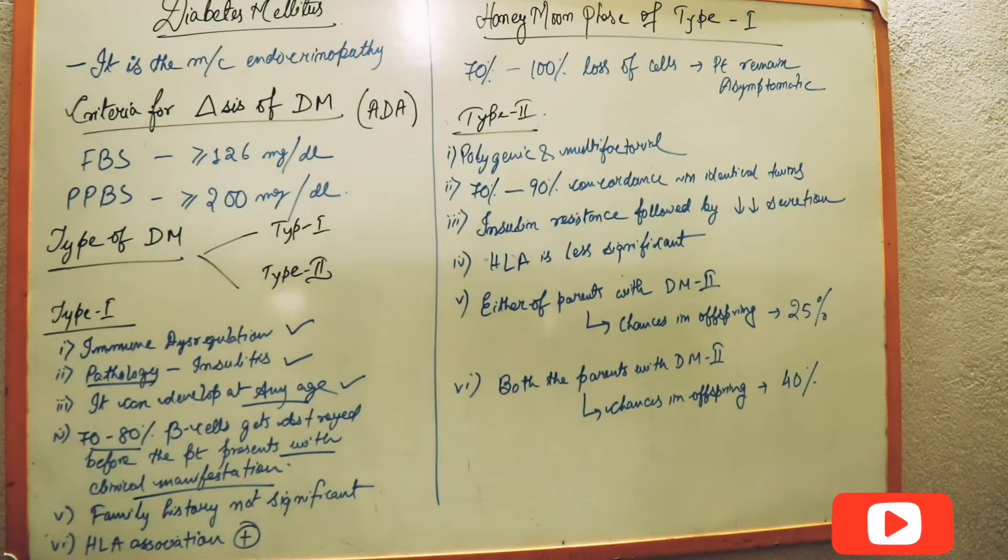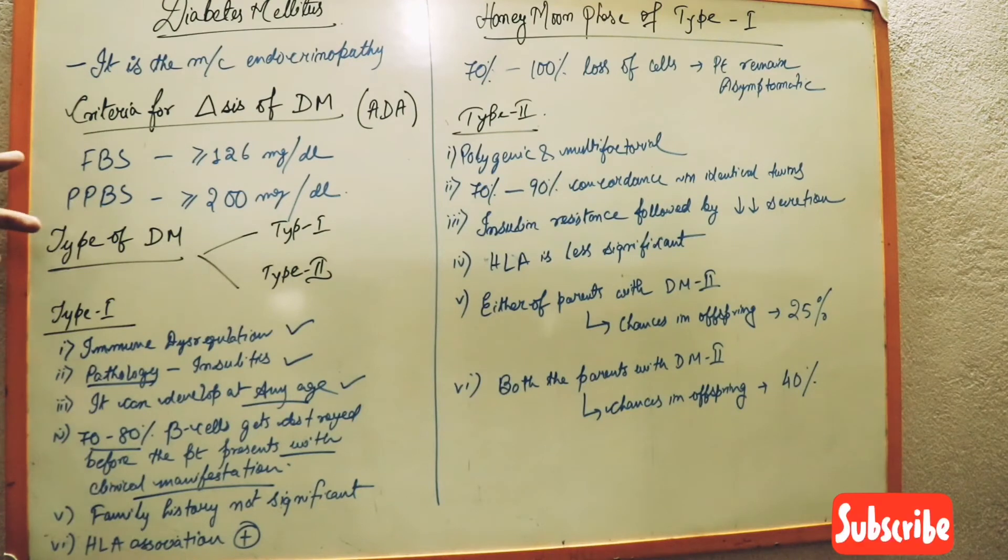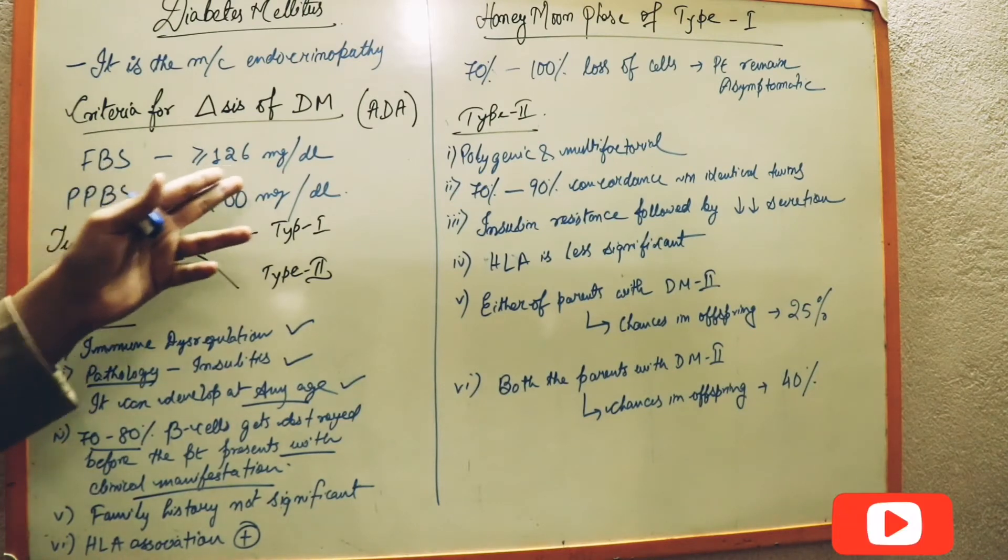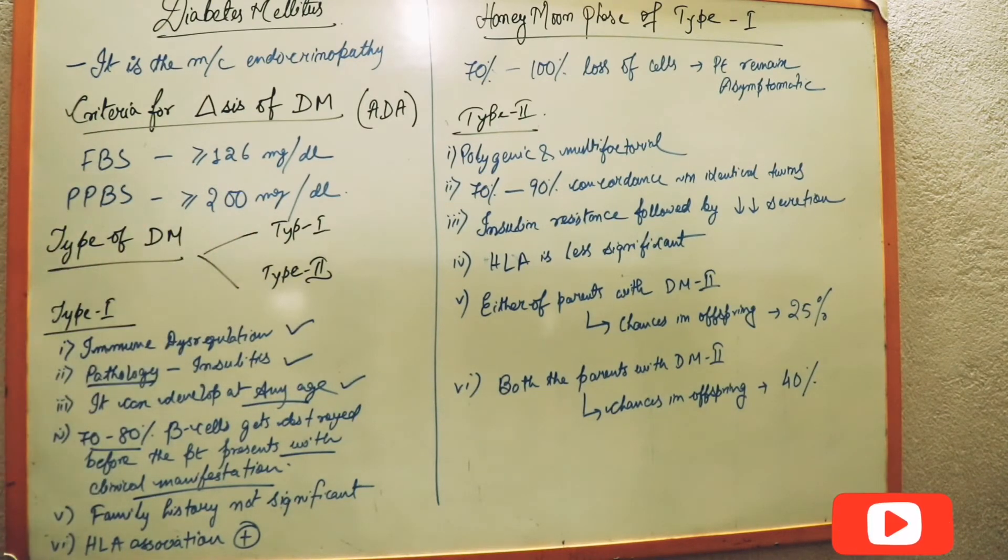What are the clinical manifestations? If we test for diabetes mellitus or glucose level, the glucose level will be absolutely high: greater than 126 for fasting and greater than 200 for postprandial blood sugar. Family history is not significant. The most important thing is that HLA association is positive in diabetes type 1.